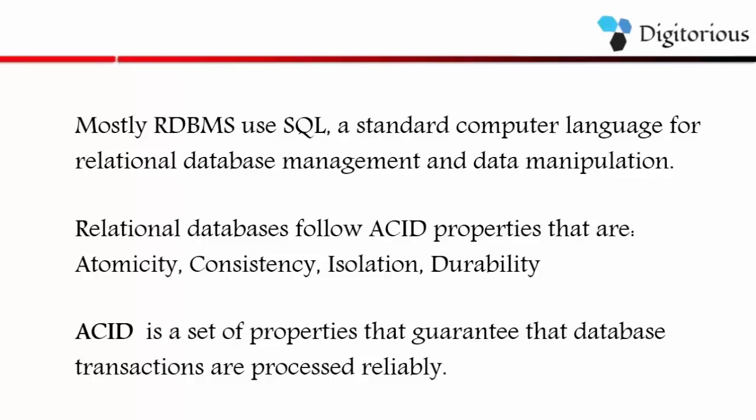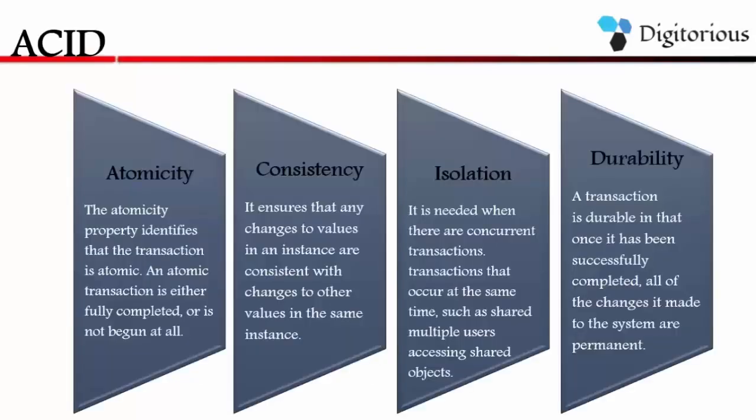Classical relational databases follow the ACID property — that is, a database transaction must be atomic, consistent, isolated, and durable. ACID is a set of properties that guarantee that database transactions are processed reliably. So the ACID properties are: atomicity, consistency, isolation, and durability.